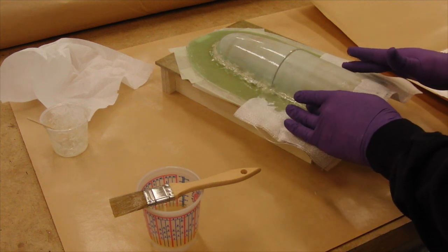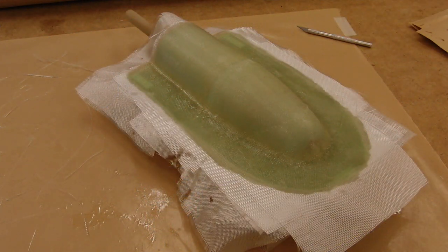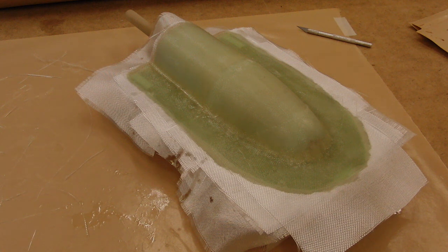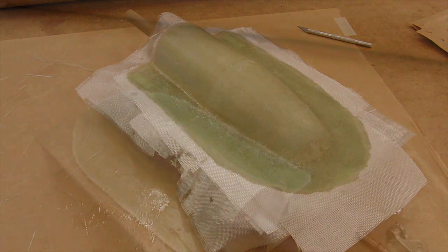And that's why it's nice to use a little bit of finer cloth for the first layer. Once we get our first layer on, we can more quickly apply the heavier cloth. And then once we have the second half laminated, again, make sure there are no air bubbles or soft spots. And we let it sit until the leather stage.